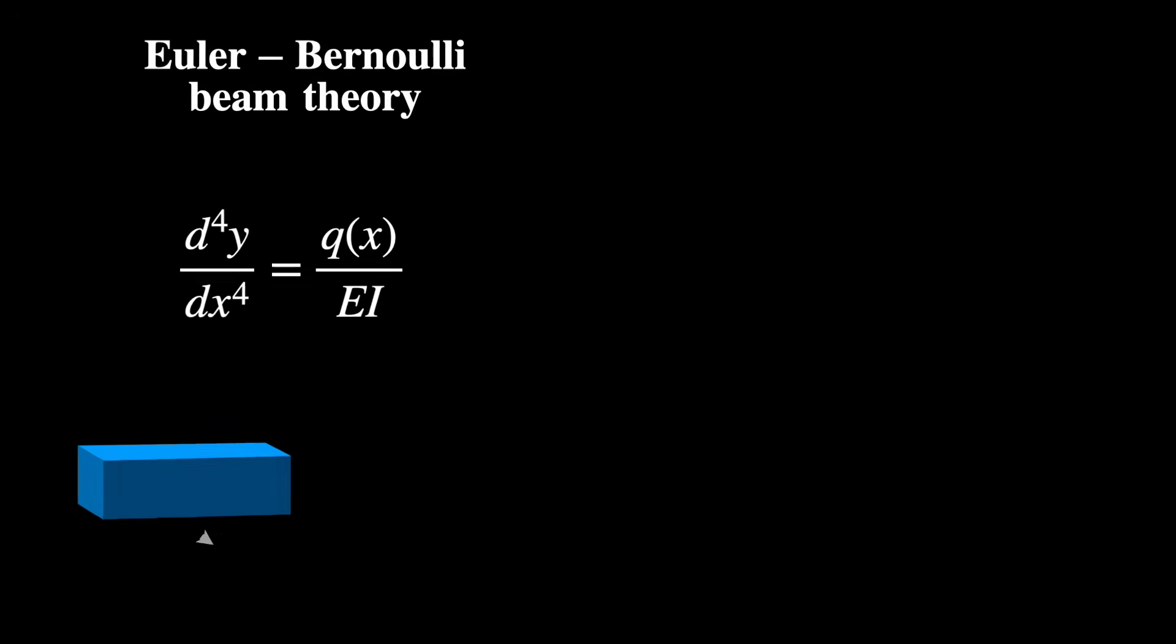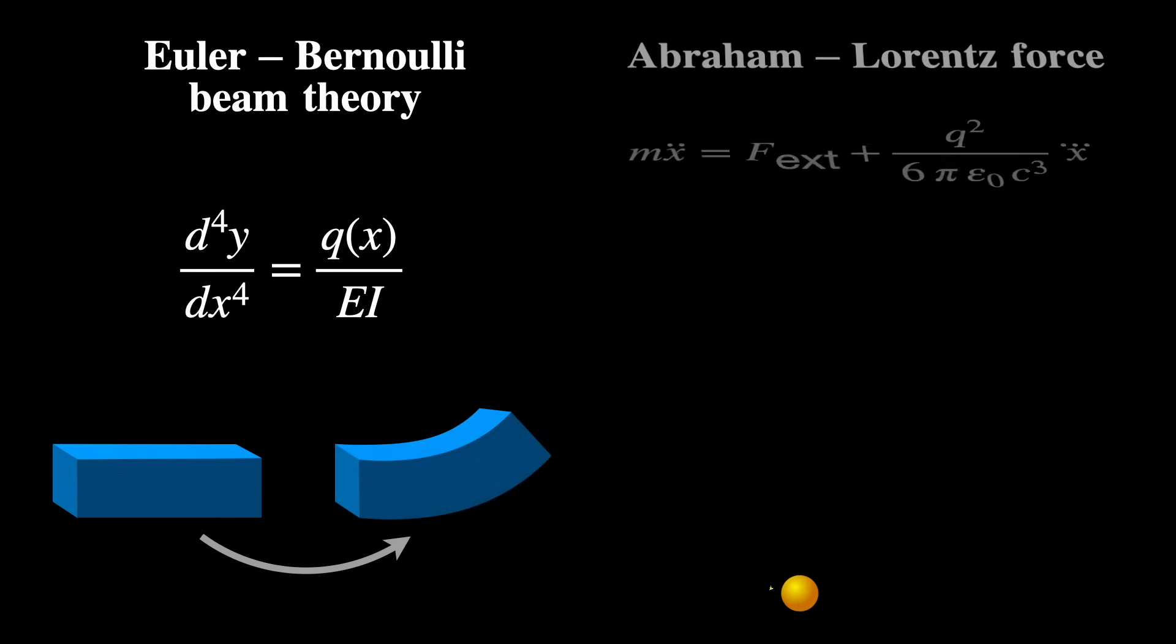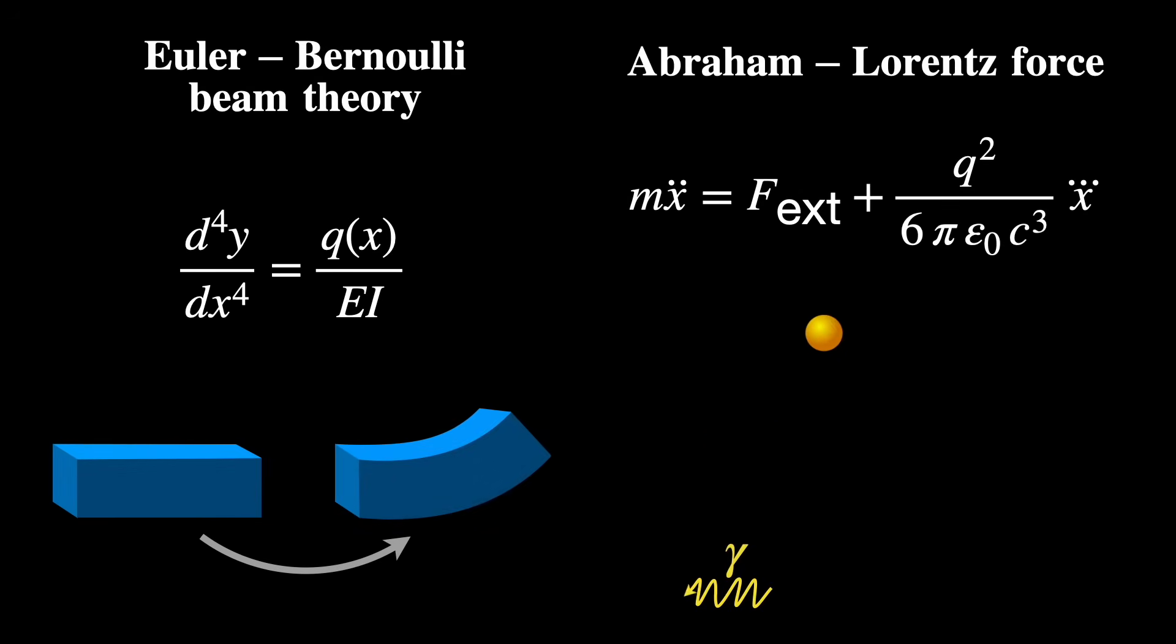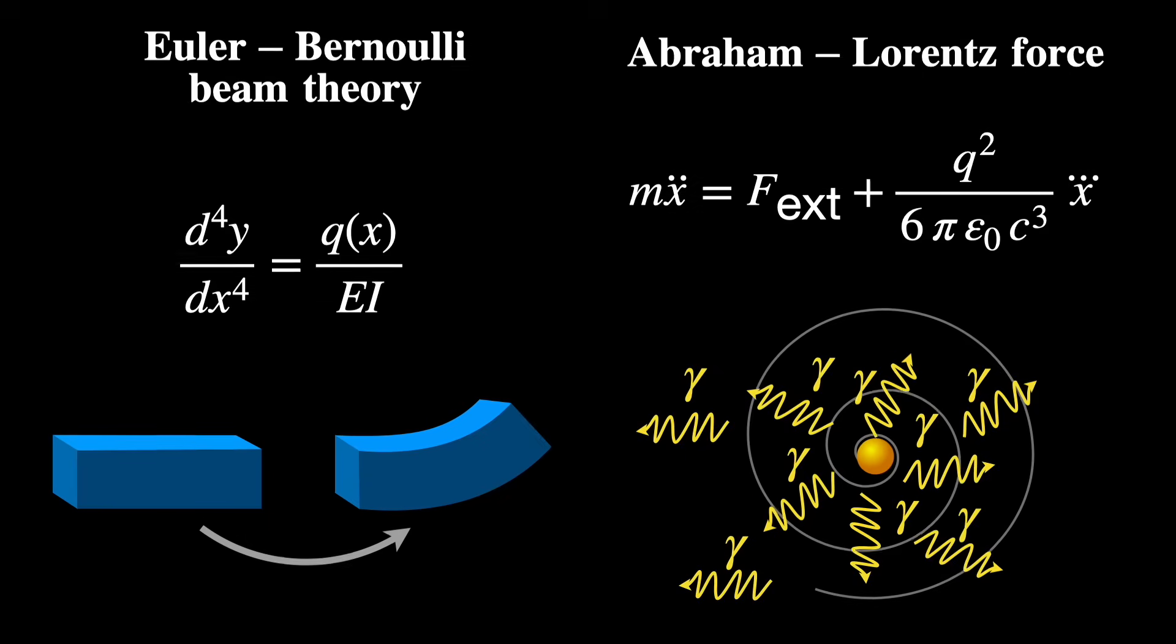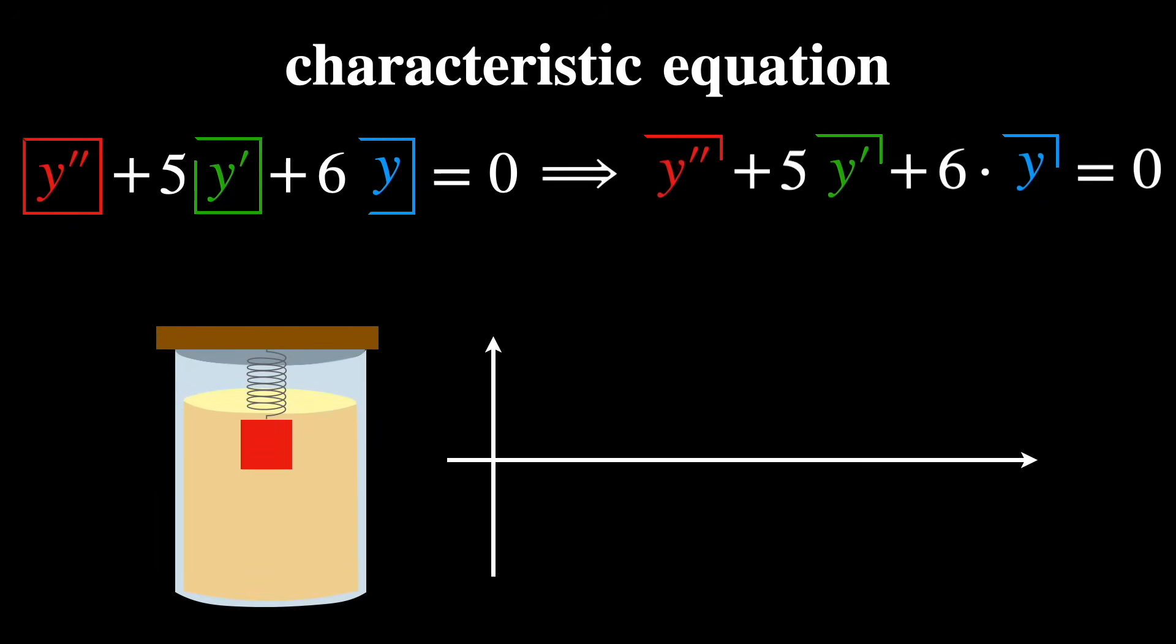When we move to second-order equations and beyond, things get a bit more technical. These equations are especially useful in physics, where many processes can be modeled using second-order differential equations, but rarely with higher orders, even though there are few cases. Here, you'll need methods such as the characteristic equation for linear constant coefficient ODEs, like for a damped spring.